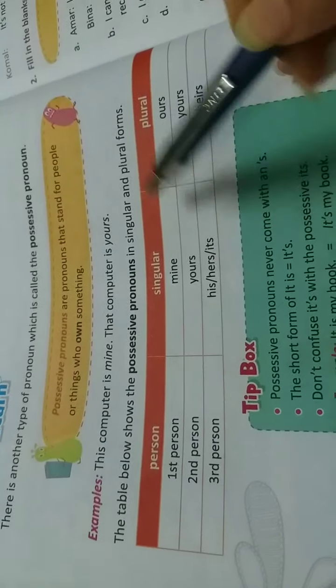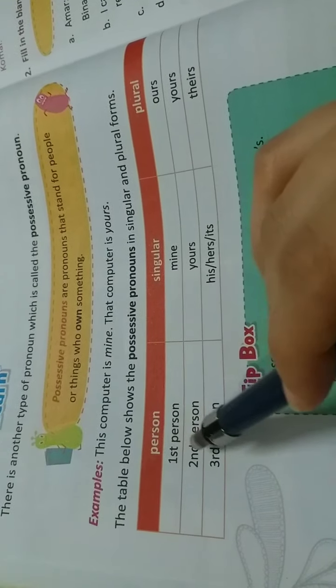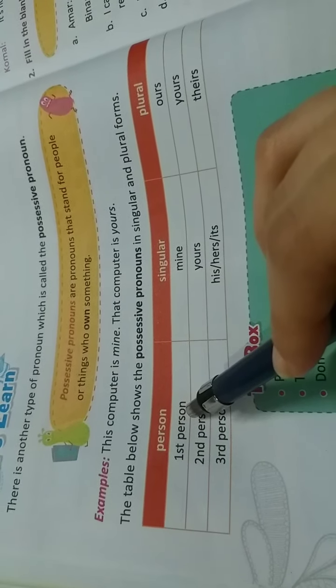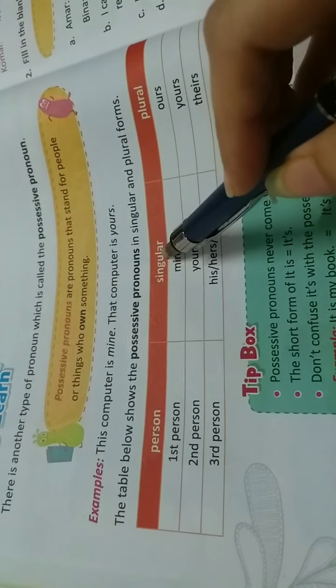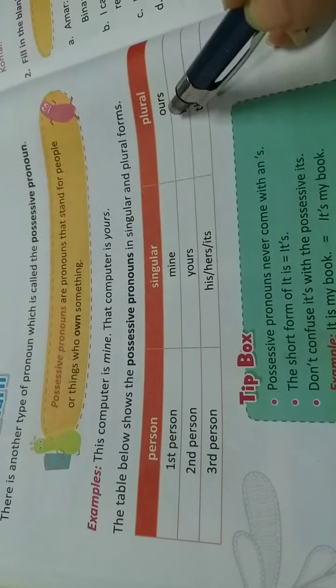Now, here a table is given wherein you can see the possessive pronouns in their singular and plural forms. Person. First person means I or we perspective. For this, in singular form we use mine and in plural form we use ours.